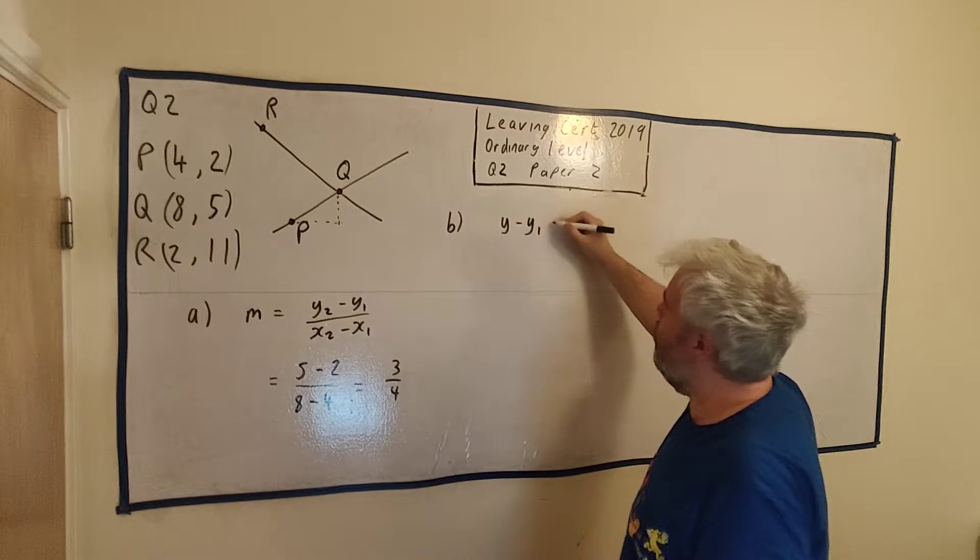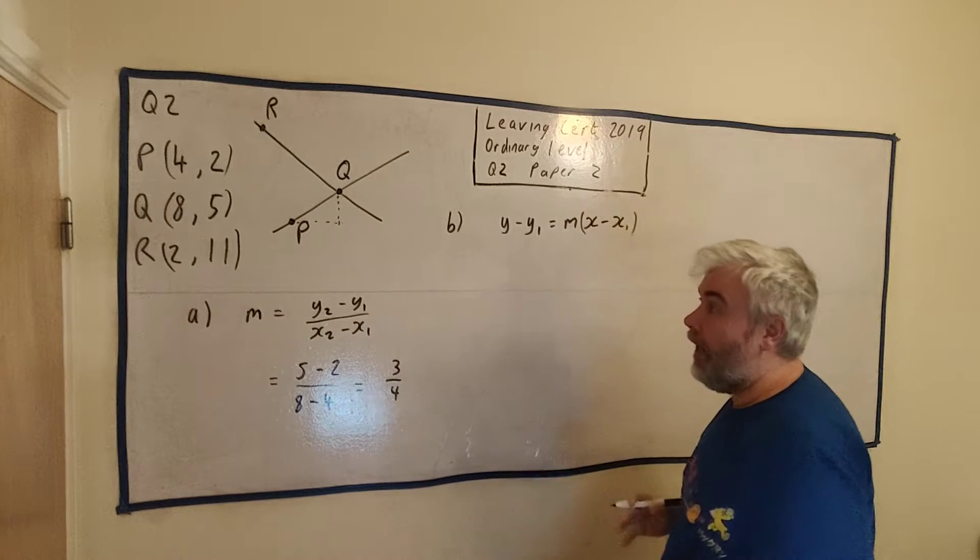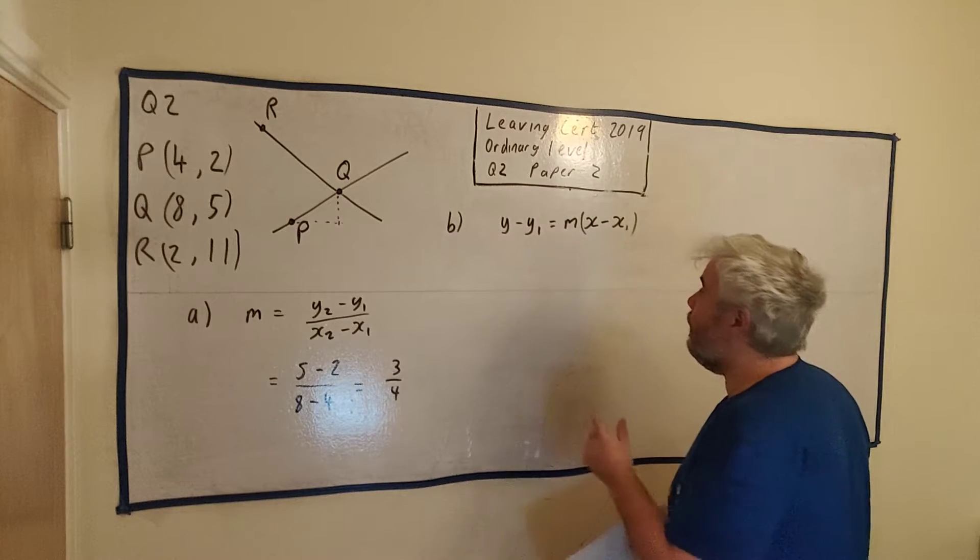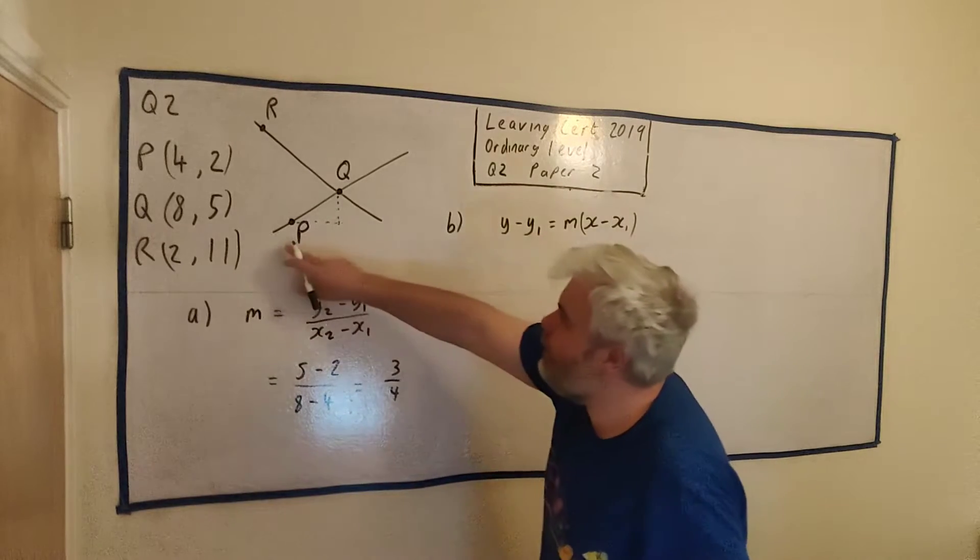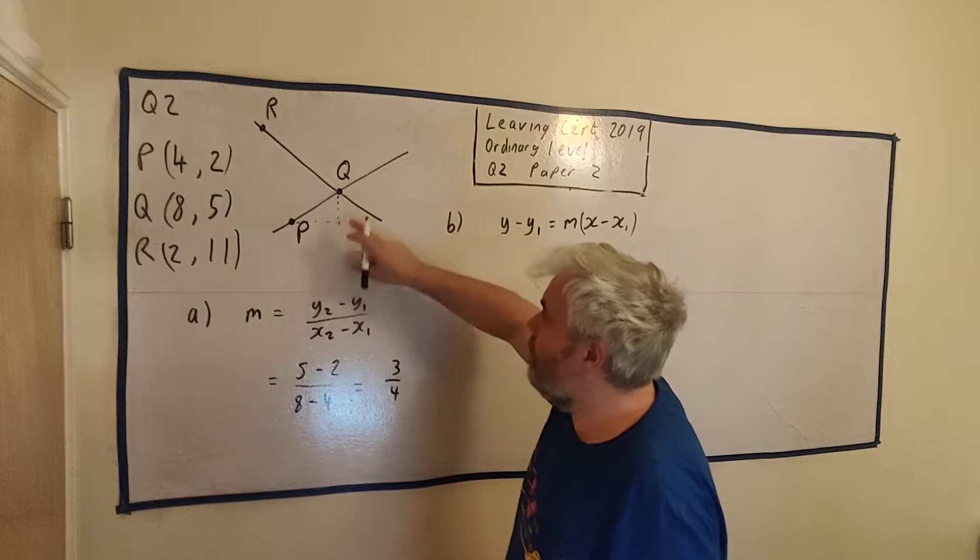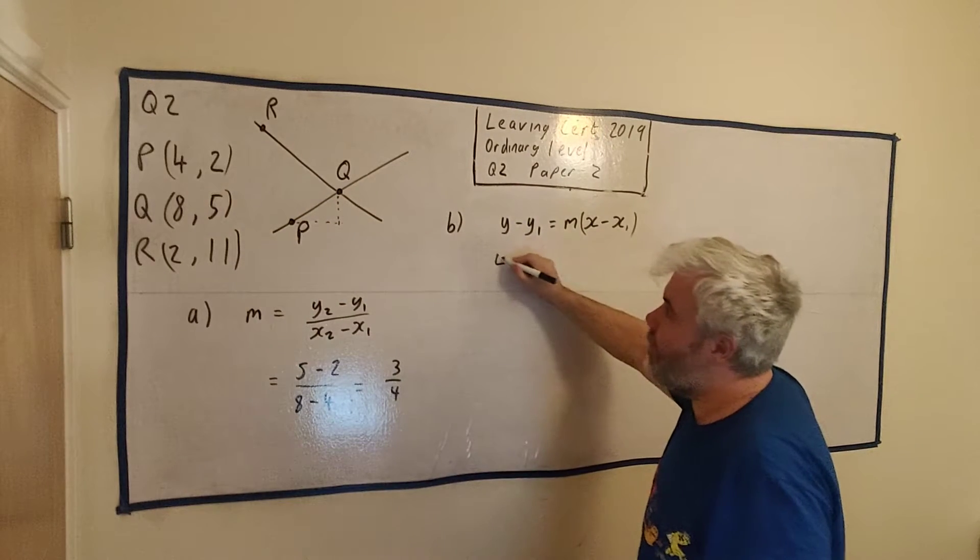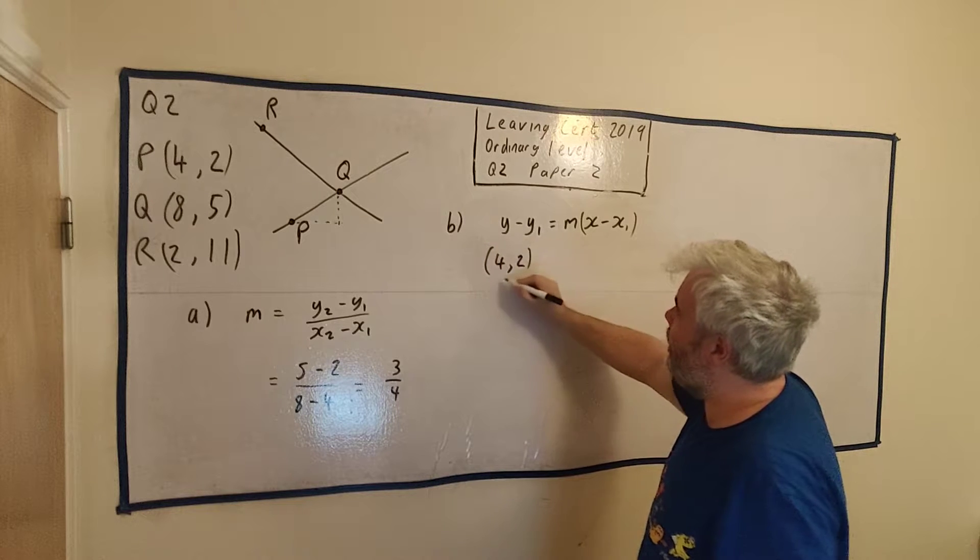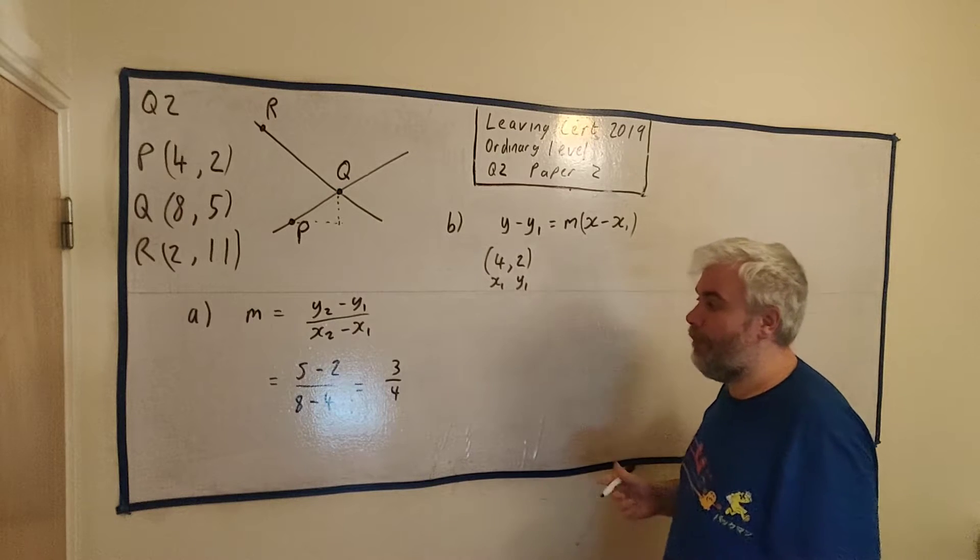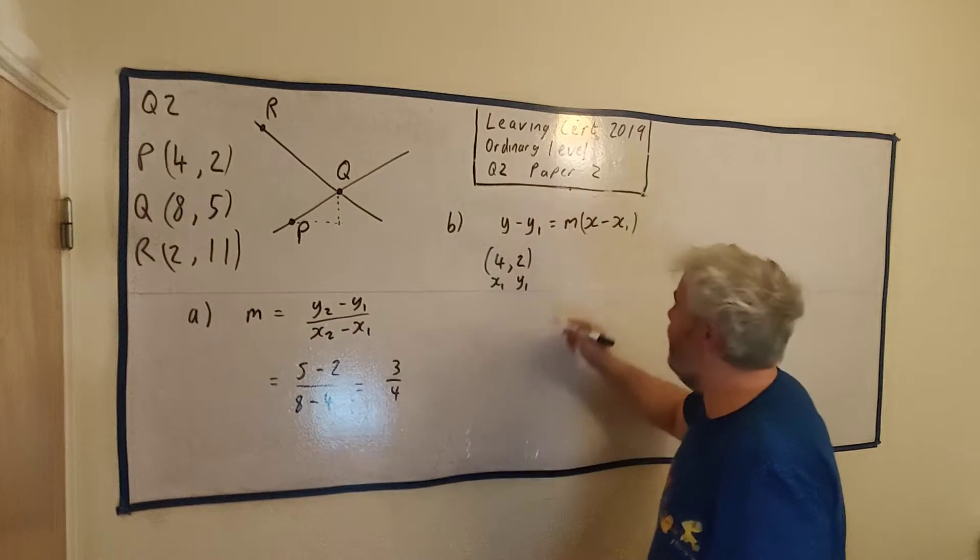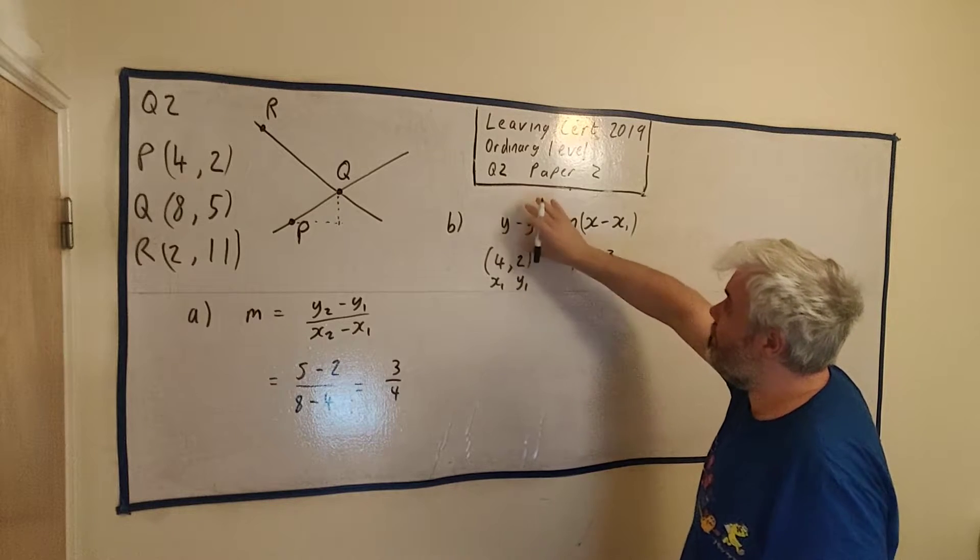Really what they're asking is find the equation of PQ. We have a formula for this: Y minus Y1 equals M(X minus X1). We need a point, X1 Y1. You can pick any one. I'll pick P at (4, 2), but you could have picked Q. And we need the slope M, which is 3 over 4.